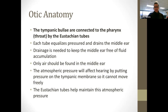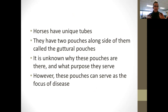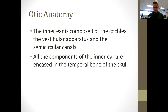Horses have unique tubes. Within their eustachian tubes they have two pouches alongside called guttural pouches. Honestly, no one really knows what purpose they serve, but those pouches a lot of times get diseased. When we get into module four and talk about horse diseases, we'll talk about some guttural pouch diseases seen in horses. All right, so we have external, we have middle, and now we have our inner ear.